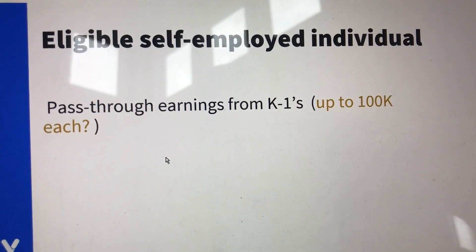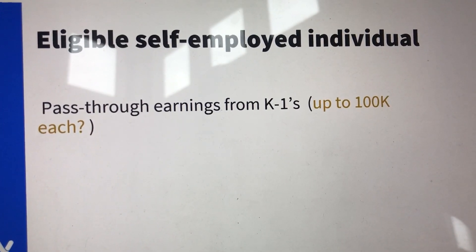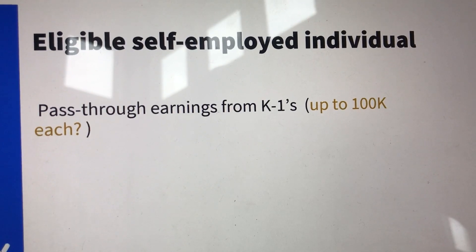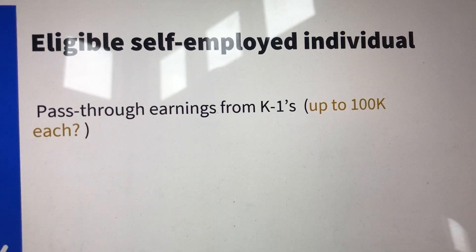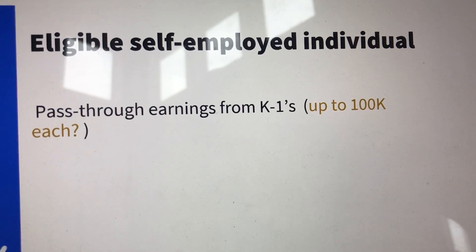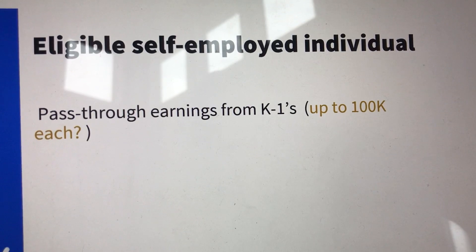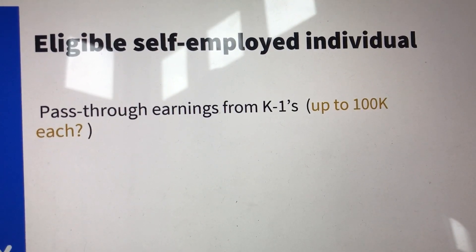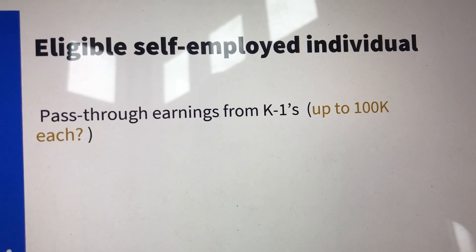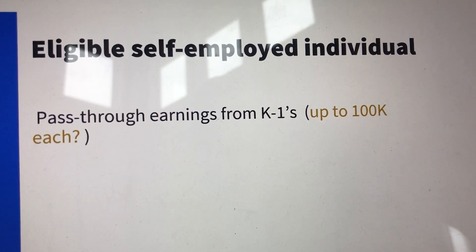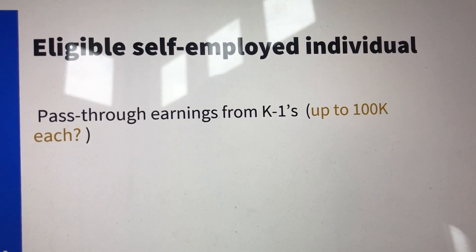If you check the box for eligible self-employed individual and you have pass-through earnings from an individual K-1, we know that's limited to $100,000. If you have multiple K-1s and you're working in multiple pass-through entities generating self-employment earnings, the question is whether you get to include $100,000 each or just in total. Being a CPA, I would take the conservative approach and assume it's $100,000 limited overall.